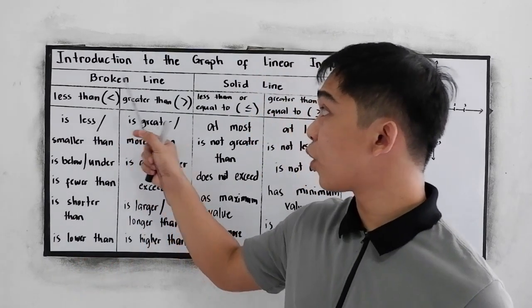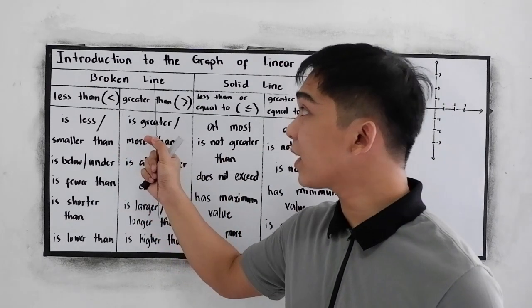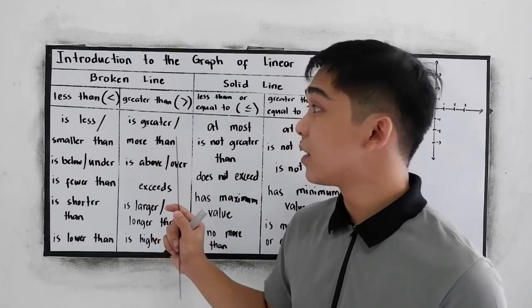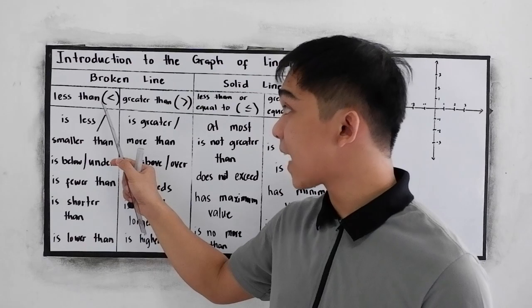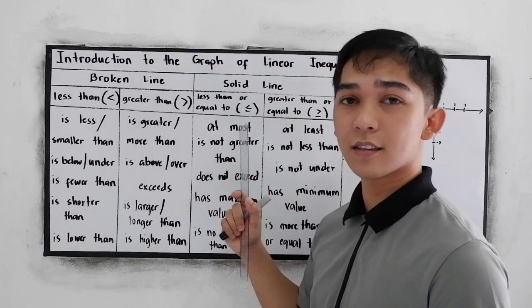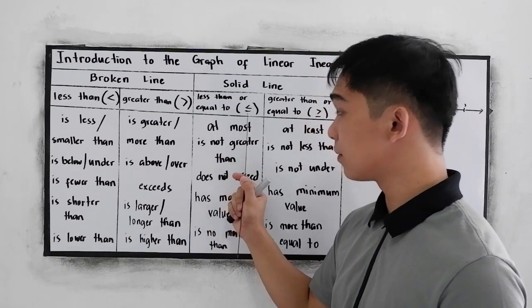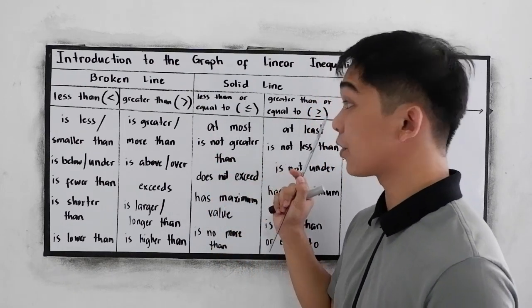So to graph, we have the broken line and the solid line. In broken line, we use this if we have the symbol less than or greater than. And for the solid line, we use the solid line if we have the less than or equal to and greater than or equal to.